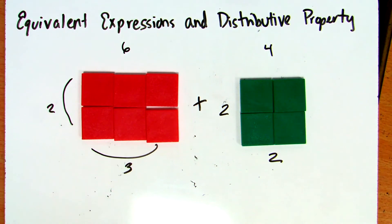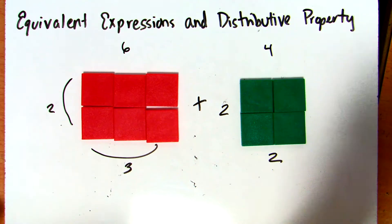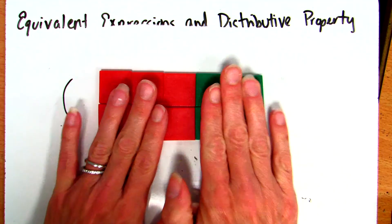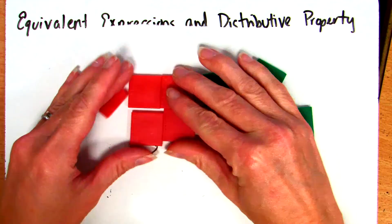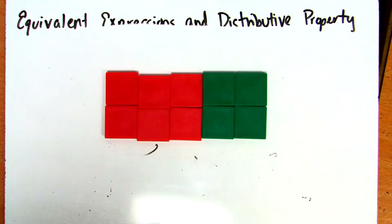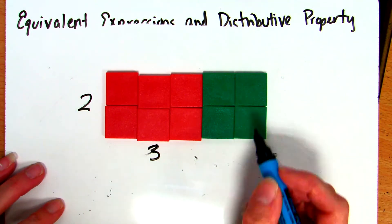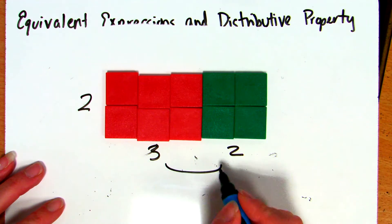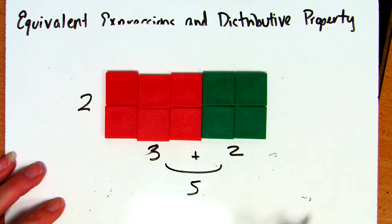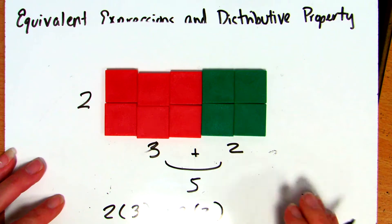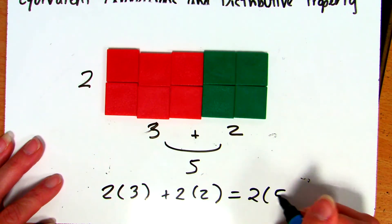So what if I add those two numbers together, like we did in investigation 4.1? All we need to do is push the green tiles and the red tiles together. Now we still have our 2 rows of 3 and our 2 rows of 2, but they're all together — so essentially we have 2 rows of 3 plus 2, which is 2 rows of 5. That is the distributive property in a nutshell: 2 rows of 3 (6) plus 2 rows of 2 (4) is the exact same thing as 2 rows of 5.